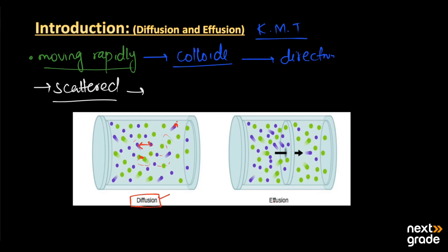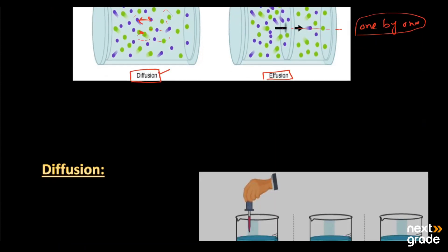On the other hand, effusion is not random escape — it is the escape of molecules one by one. Both of these properties of gas molecules can be explained on the basis of the kinetic molecular theory. Let's look at these two properties one by one.